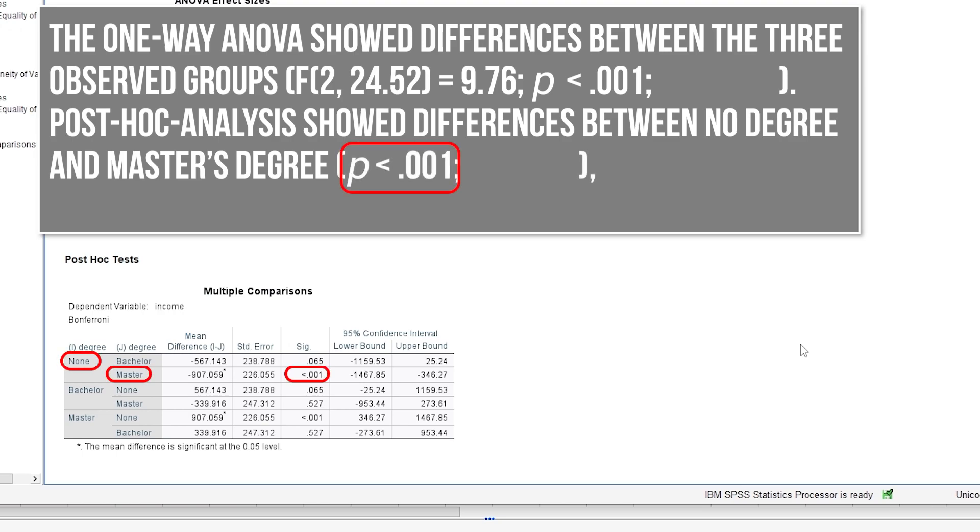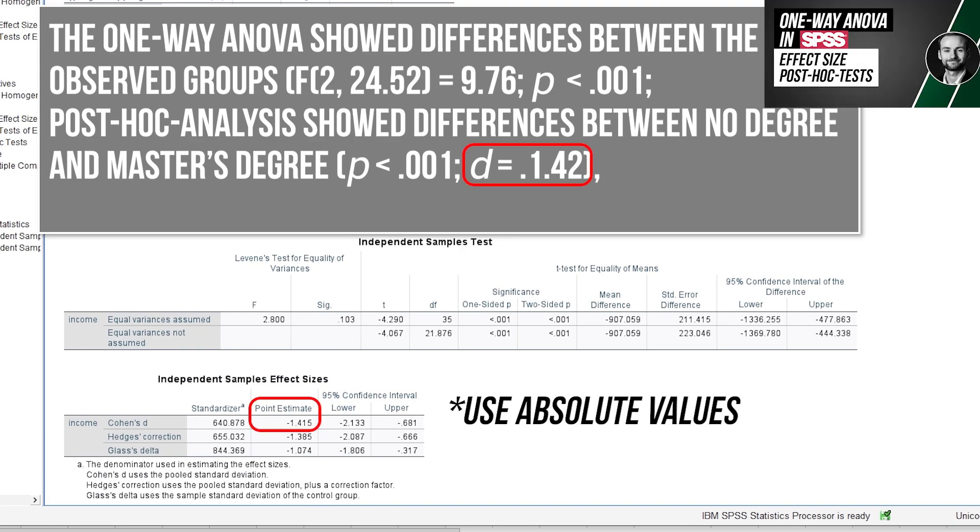You can further supplement this with group means or mean differences. When you were able to observe an effect in your post-hoc testing, also report the calculated effect size, Cohen's D, or Hedges' correction of it.